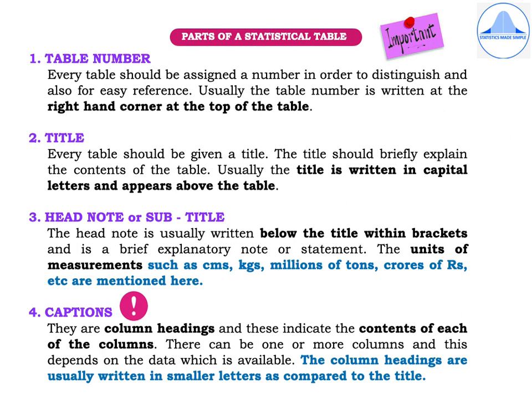I will now explain the different parts of a statistical table. First, we have the table number. Every table should be assigned a number in order to distinguish and also for easy reference. Usually the table number is written at the right-hand corner at the top of the table.